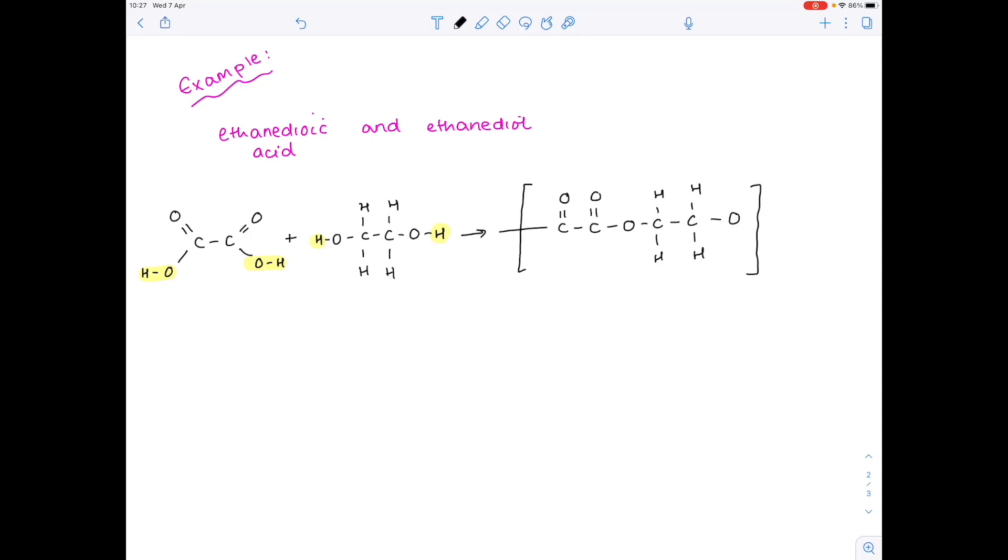Elongate those bonds. Just like addition polymerization. And add an N here. And here to show that you've got many subunits. We're going to produce water molecules. And we're actually going to produce 2N number of water molecules.